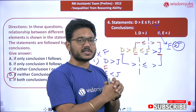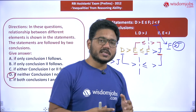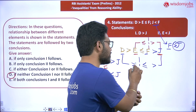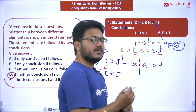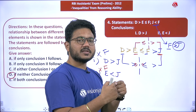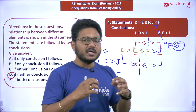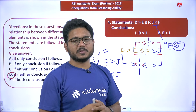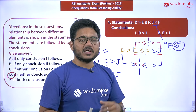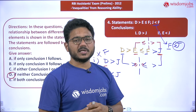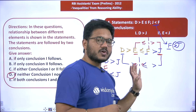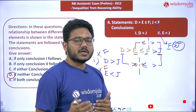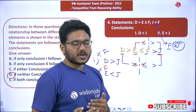An interesting concept to remember: whenever you have opposite symbols, think of the analogy of like poles in magnetism. The inequality signs are pointed, and when like poles face each other they repel — meaning the relationship cannot be established. This analogy helps fix the concept in your mind. This concept is also explained in detail in our recorded live session.